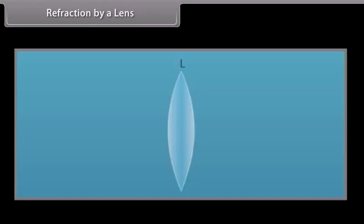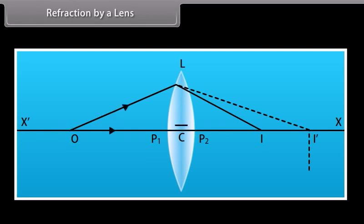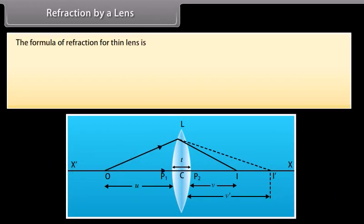Refraction by a lens. Suppose L is a thin lens. The refractive index of the material of the lens is N2, and it is placed in a medium of refractive index N1. The optical center of the lens is C, and X-X is the principal axis. The radii of curvature of the surfaces are R1 and R2, with poles P1 and P2. The thickness of the lens is T, which is very small. O is a point object on the principal axis, at distance U from pole P1. The first refracting surface forms the image of O at I′, at distance V′ from P1. The image I′ acts as a virtual object for the second surface, and after refraction at the second surface, the final image is formed at I.